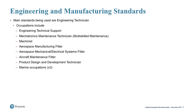The main engineering technician standard covers a range of occupations including engineering technical support, mechatronics and maintenance, machinists, aerospace manufacturing fitter, aerospace mechanical and electrical systems, maintenance fitters in aerospace, product design and development, and marine occupations. Many of these have been active for three years. The first endpoint assessments for the mechatronics technician took place in September 2017, with the majority of the first cohort sitting their EPA between March and September 2018. The first cohort of aerospace learners will be preparing for EPAs around June to September 2018.